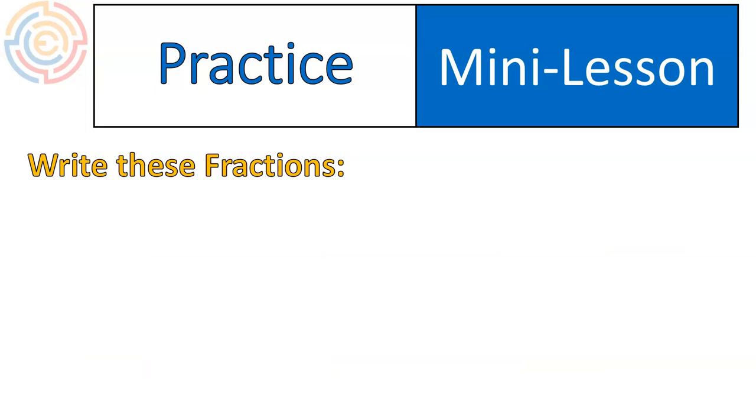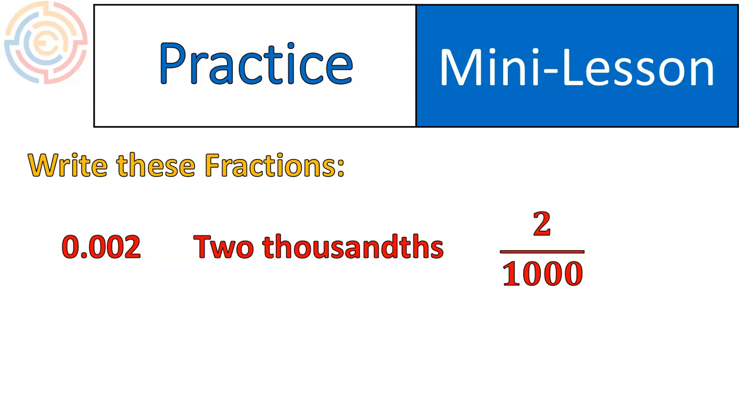So we're going to get one step more complicated. Each slide has been one step more complicated, so here's the next one. If I had this number, 0.002, what is that? How would I say it, first of all? I would say two-thousandths for that one. There's two, and it ends in the thousandths column, so it would be two-thousandths.